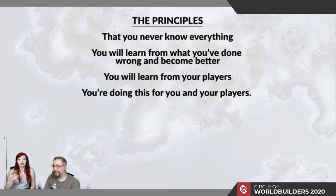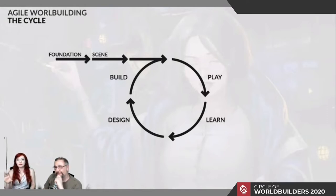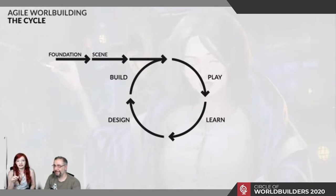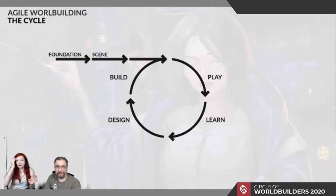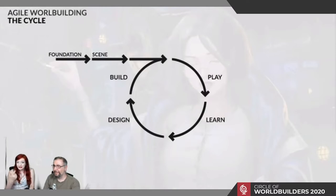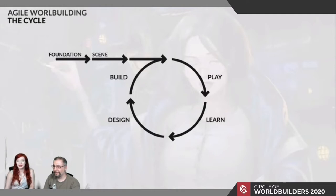What does this look like practically? This is the agile worldbuilding cycle. At the start, you have the foundation and the scene — you do these only once. This is the setup of your world. Once you have these first principles, you can use them as touchstones again and again without needing to keep adding to them. They give you references — everything you need to know. Then you go into the agile cycle: play your session, learn from your players and yourself, dream and design what comes next, and finally build only in paragraphs and sentences.